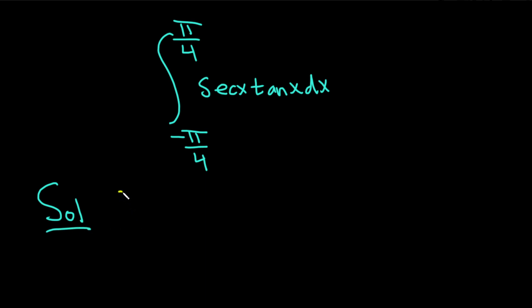Solution. So we have the integral from negative pi over 4 to pi over 4 of the secant of x times the tangent of x dx.